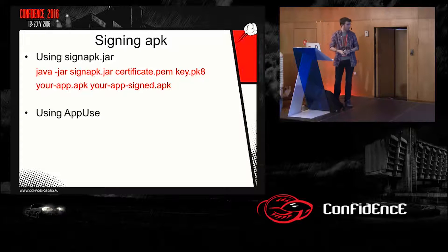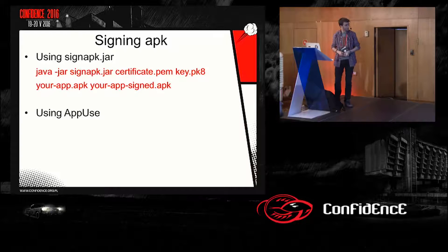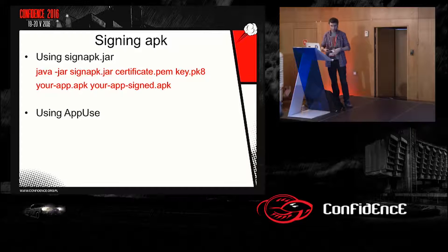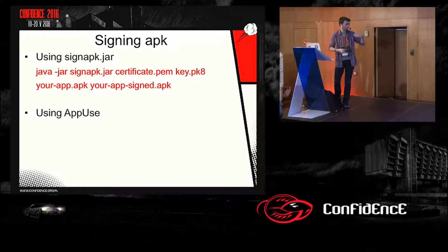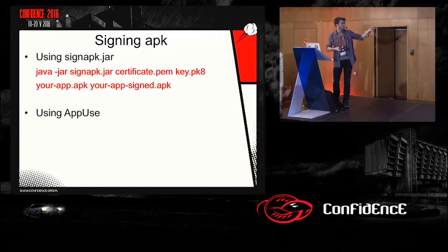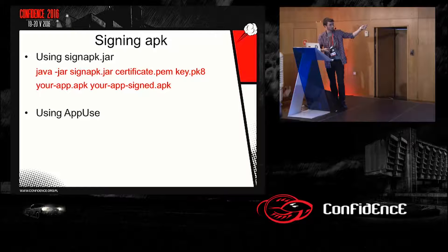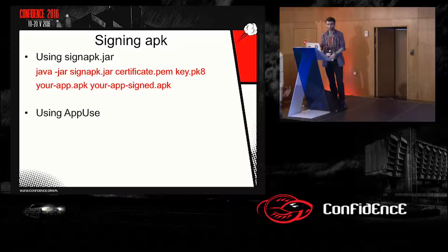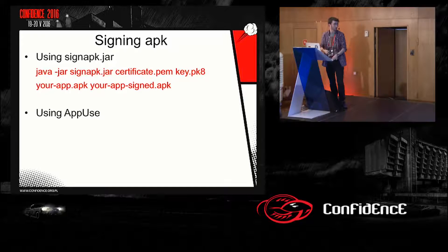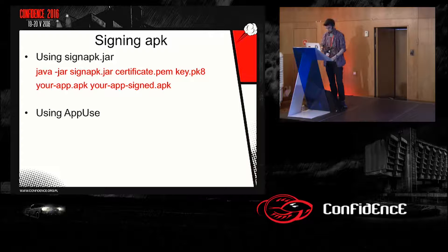Another important step in the reverse engineering process is signing the APK. After we modify our application, we need to sign the APK, because otherwise the device will not be able to install it. We can execute this using sign-apk.jar, or if you use AppUse, just clicking recompile will automatically sign the application.